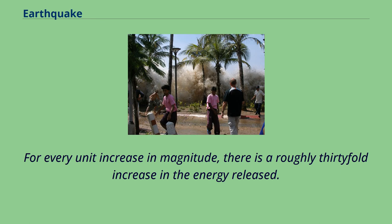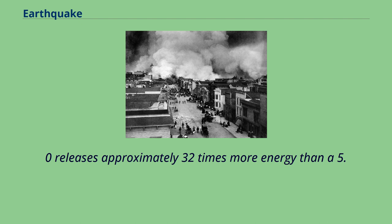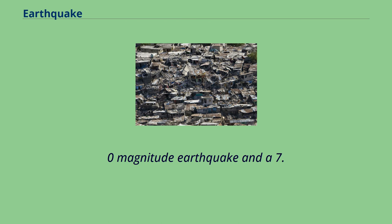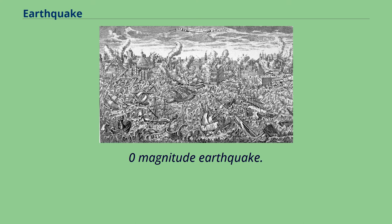For every unit increase in magnitude, there is a roughly 30-fold increase in the energy released. For instance, an earthquake of magnitude 6.0 releases approximately 32 times more energy than a 5.0 magnitude earthquake, and a 7.0 magnitude earthquake releases 1,000 times more energy than a 5.0 magnitude earthquake.